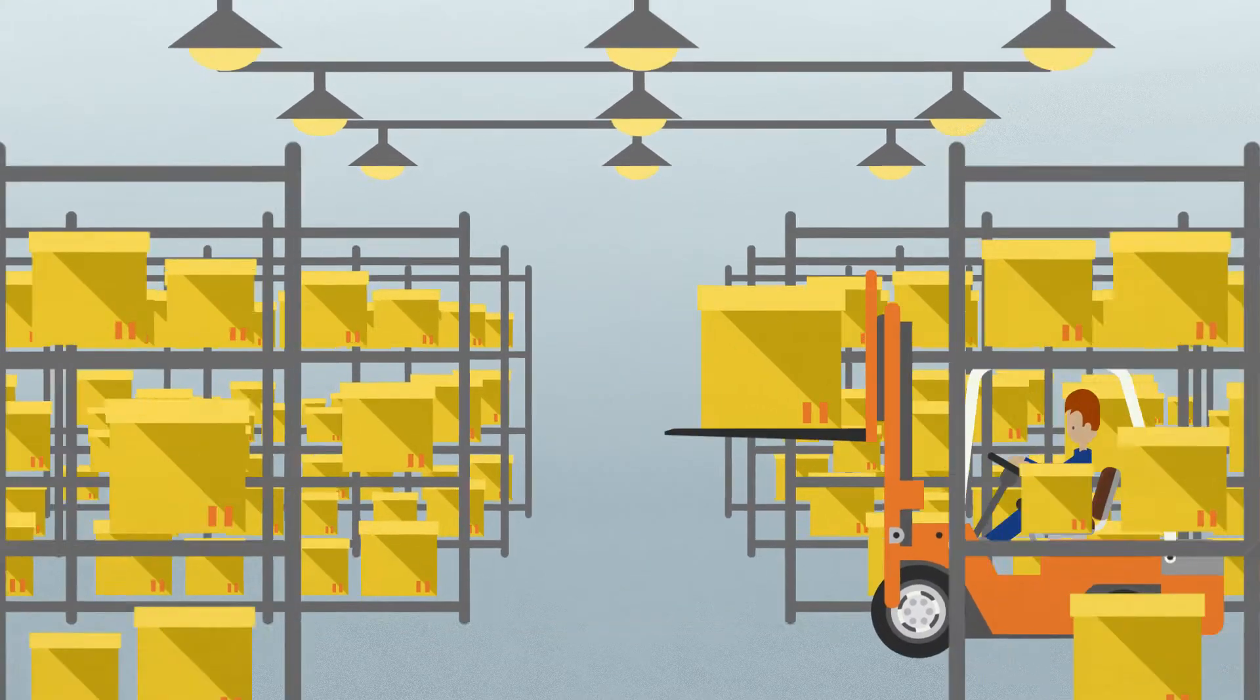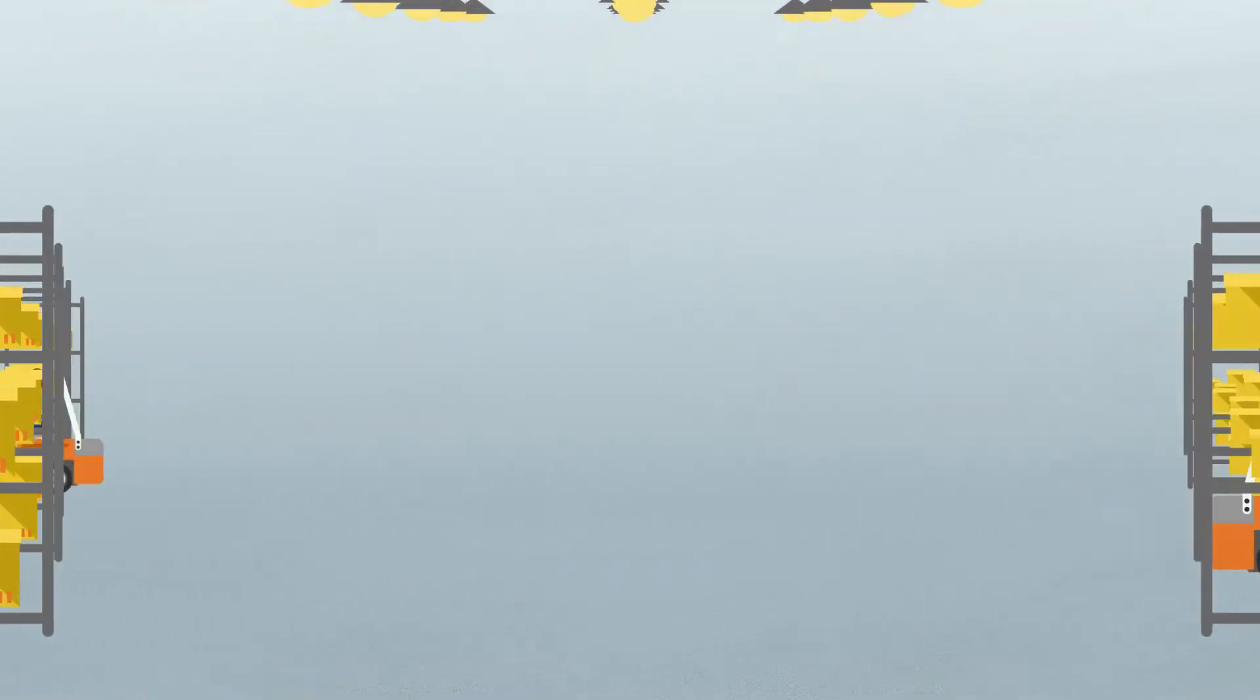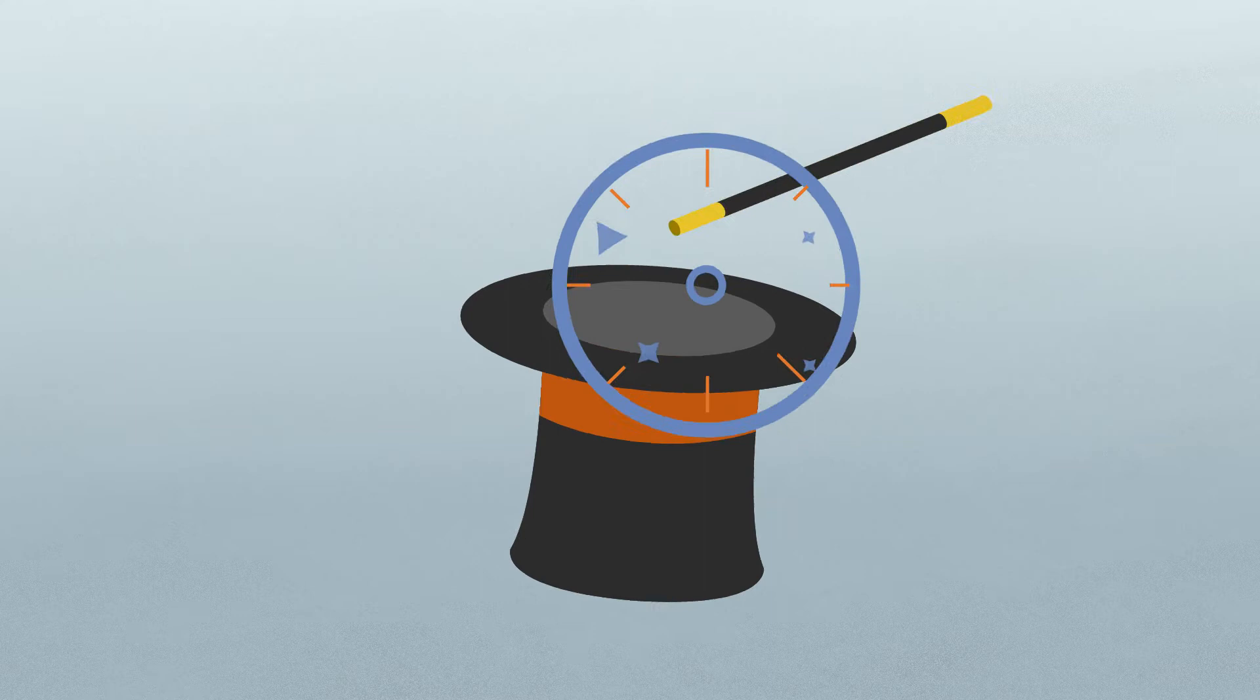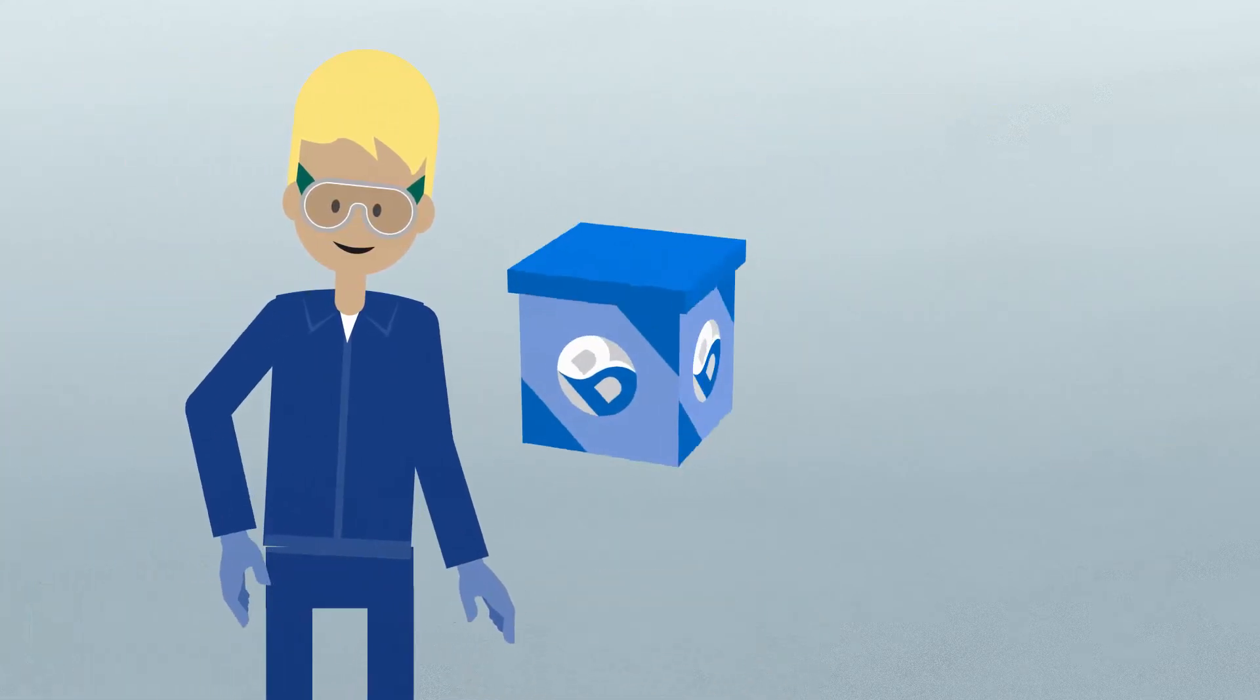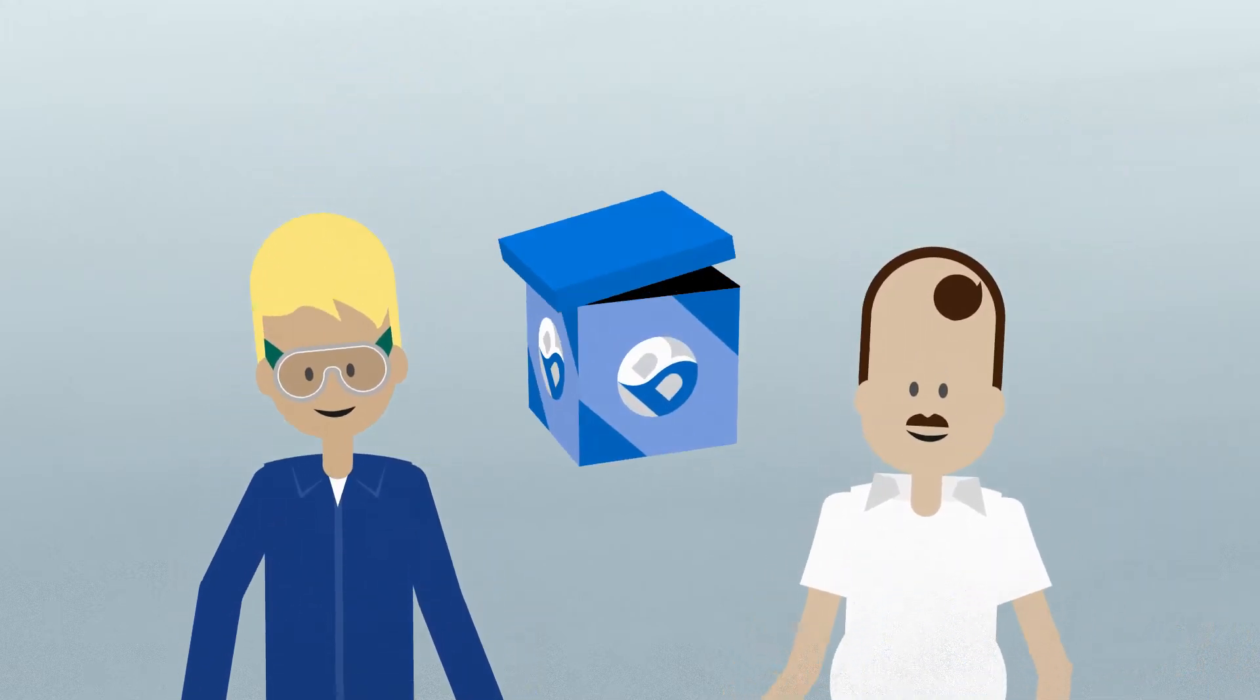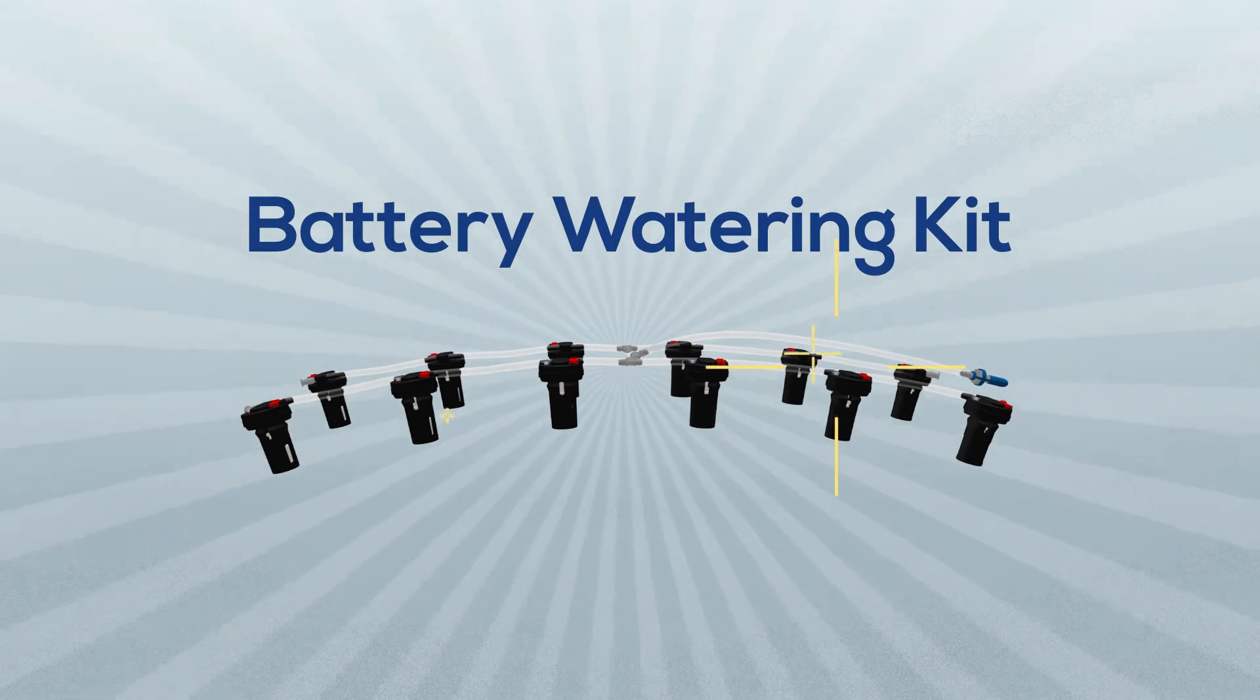For all this to work, the batteries have to be watered and watered right. Now this is the point I introduce the magic box. What's inside the box will change this guy's life and this guy's too. Inside is our battery watering kit. I promise it will work like magic.